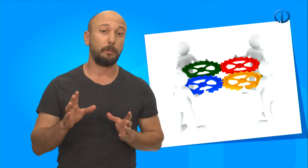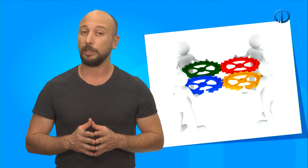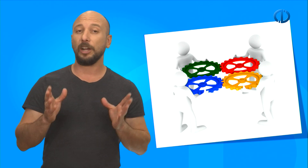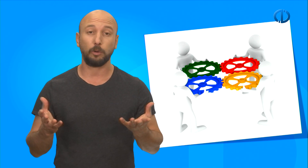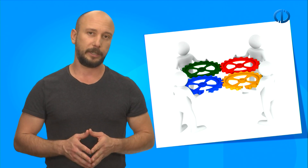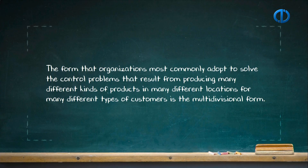A function is a group of people working together who have similar skills or use the same kind of knowledge, tools, or techniques to perform their jobs. A functional form consists of all the departments that an organization requires to produce its goods or services. The form that organizations most commonly adopt to solve the control problems that result from producing many different kinds of products in many different locations for many different types of customers is the multidivisional form. A multidivisional form groups functions according to the specific demands of products, markets, or customers. The goal behind a change into a multidivisional form is to create smaller, more manageable sub-units within an organization.